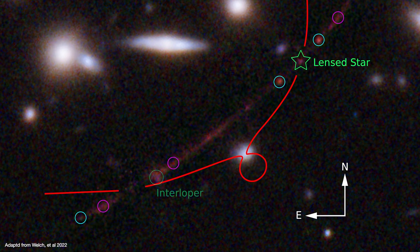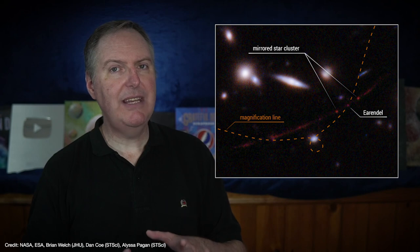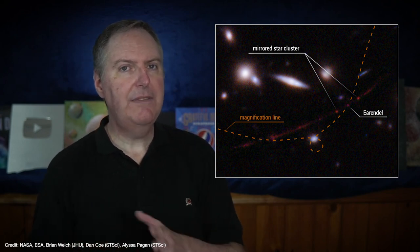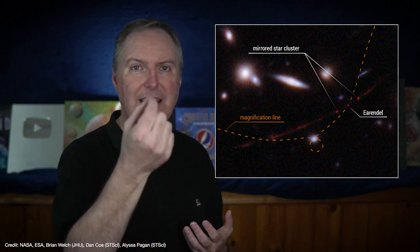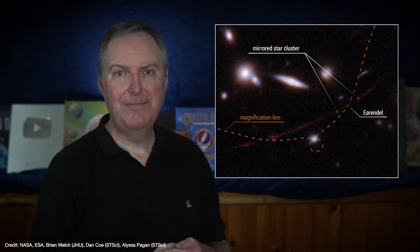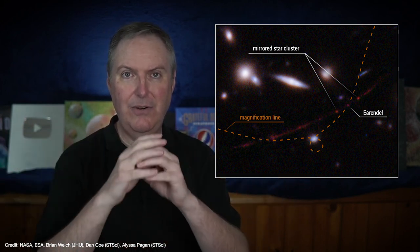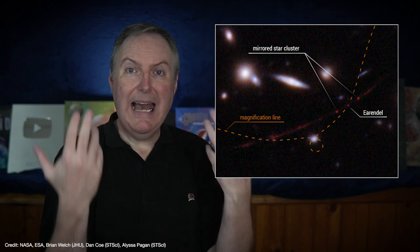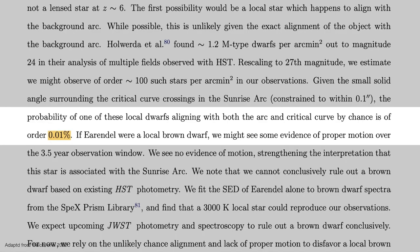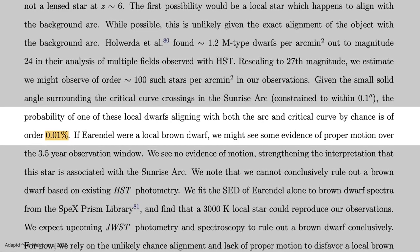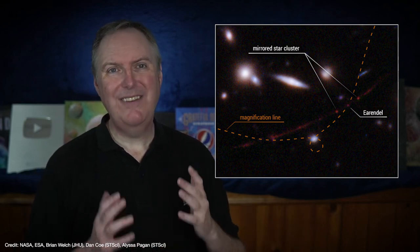And that leaves another possibility that Earendel is actually a faint star or even a brown dwarf in the Milky Way, and it just happens to have the same red color as the rest of the arc. However, the chances that a star of any kind, let alone a red dwarf, would happen to line up with both the arc and the critical curve by random chance works out to be around 0.01%. It's not impossible, but it's very, very unlikely.